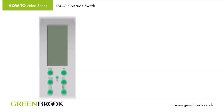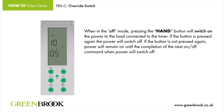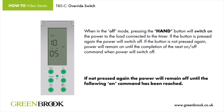Override switch. When in the off mode, pressing the hand button will switch on the power to the load connected to the timer. If the button is pressed again, the power will switch off. If the button is not pressed again, power will remain on until the completion of the next on/off command, when power will switch off. If not pressed again after that, the power will remain off until the following on command has been reached.